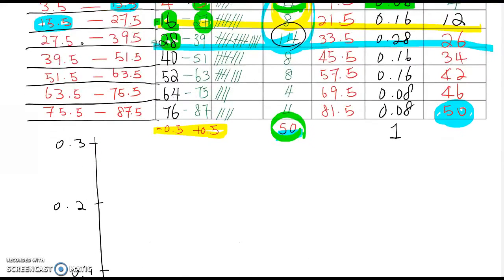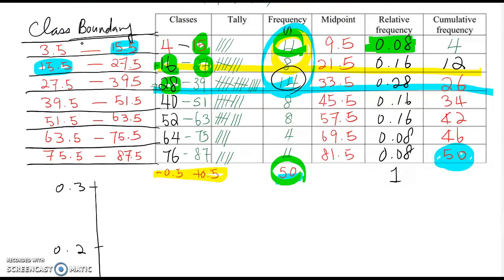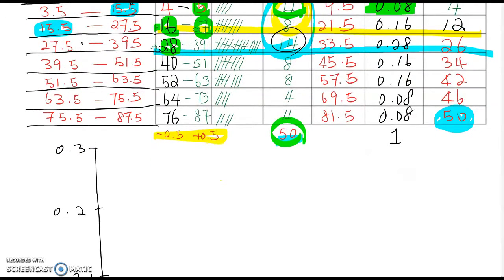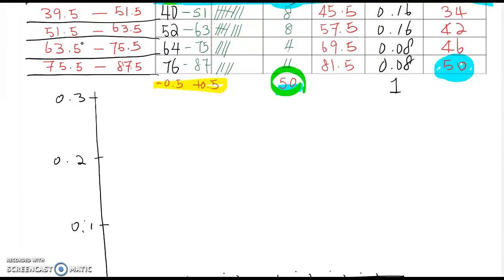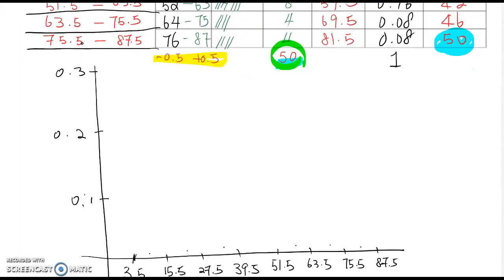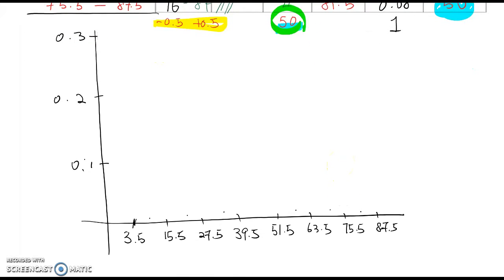So because this one is hundredth digit, I cannot actually indicate all the each unit scale. Therefore, I'm going to make every 10th unit value, which is 0.1, 0.2, and 0.3, constructing the histogram using relative frequency.